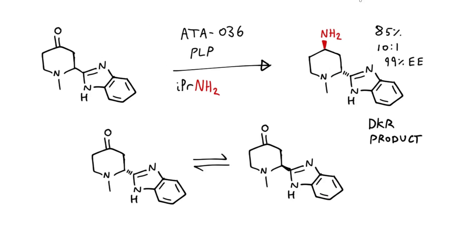The racemization actually turns out to be a good thing, because this is the step that the chirality is introduced. So the substrate was reacted with this enzyme, ATA-036, in the presence of the cofactor pyridoxal phosphate and isopropyl amine.